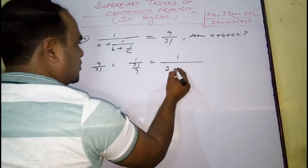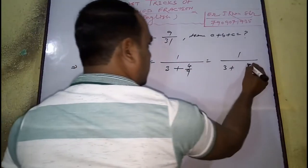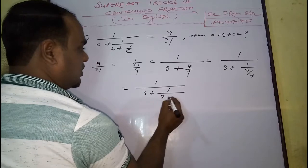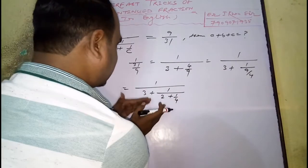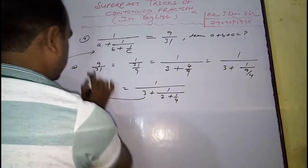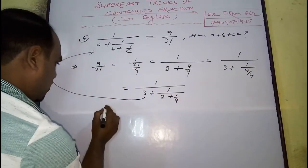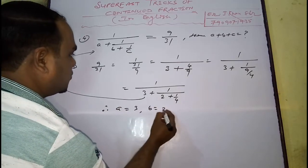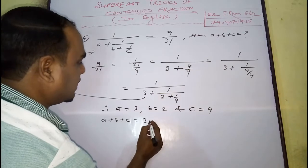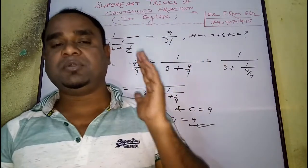Now, 31 by 9 gives 27 plus 4 by 9, which is 3 plus 4 by 9. Then 1 by 3 plus 1 by 2 plus 1 by 4. Now compare this with the LHS of your question. You will get 3 in place of A, 2 in place of B, and 4 in place of C. So A equals 3, B equals 2, C equals 4. We have to find A plus B plus C, which is 3 plus 2 plus 4, giving 9. And 9 will be your answer.